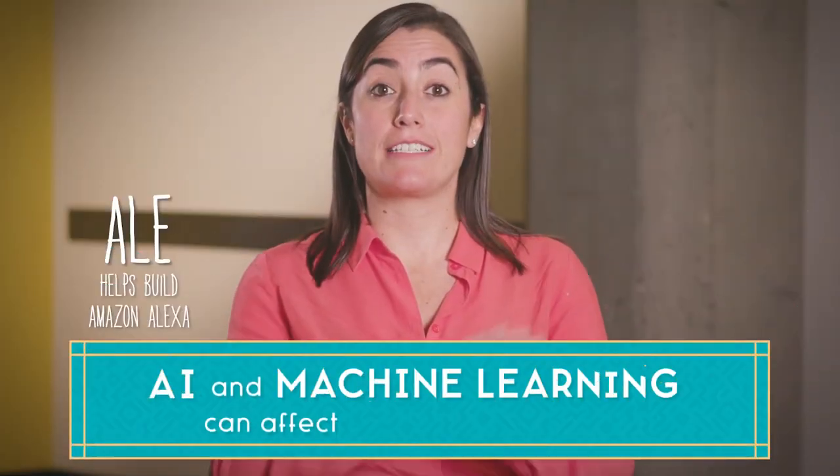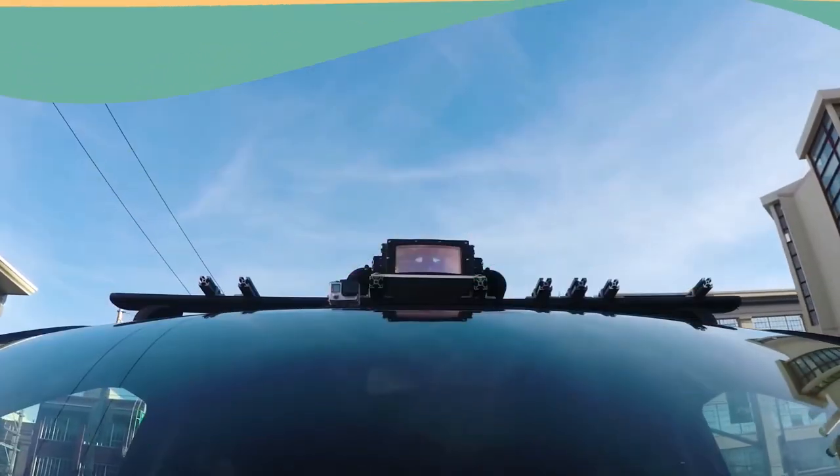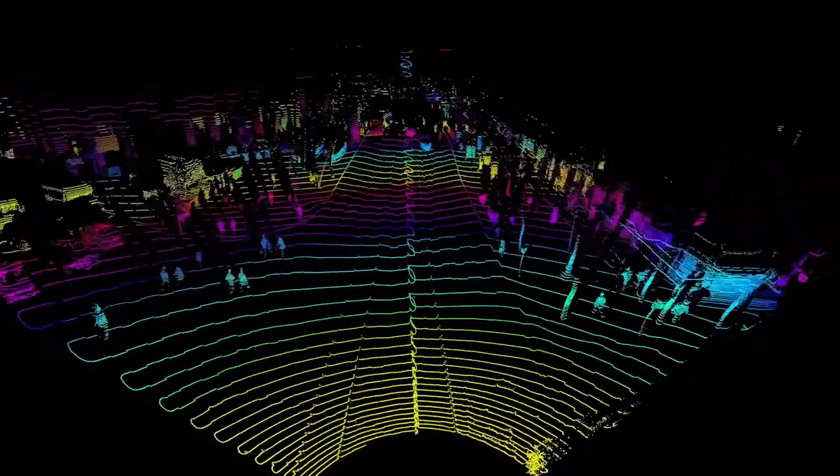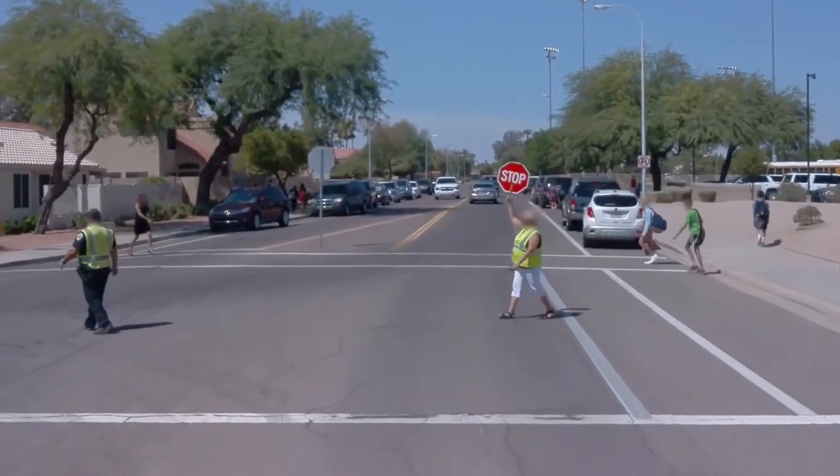AI and machine learning can affect every part of society. For instance, self-driving cars use AI to recognize their surroundings, track objects, and make super important decisions, like when to stop.